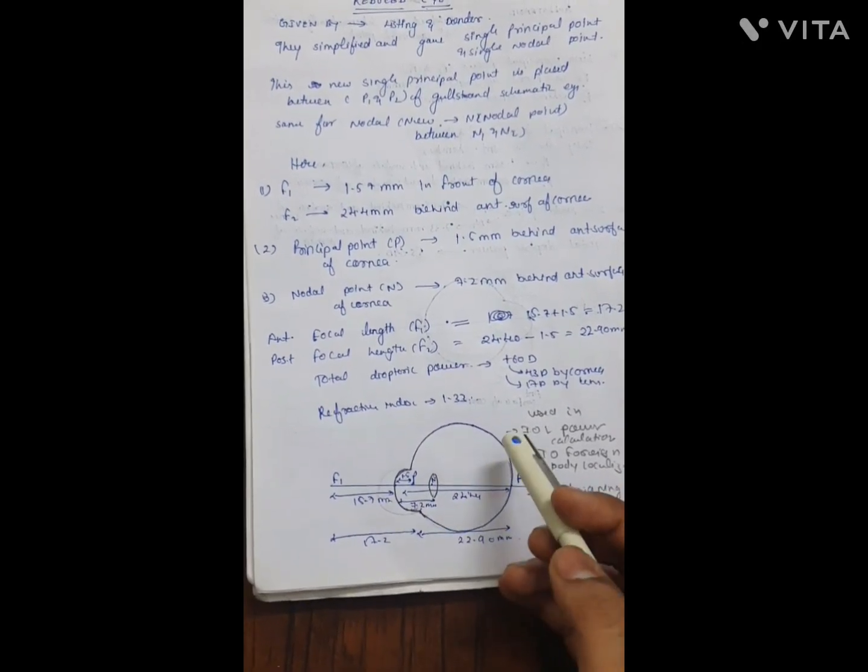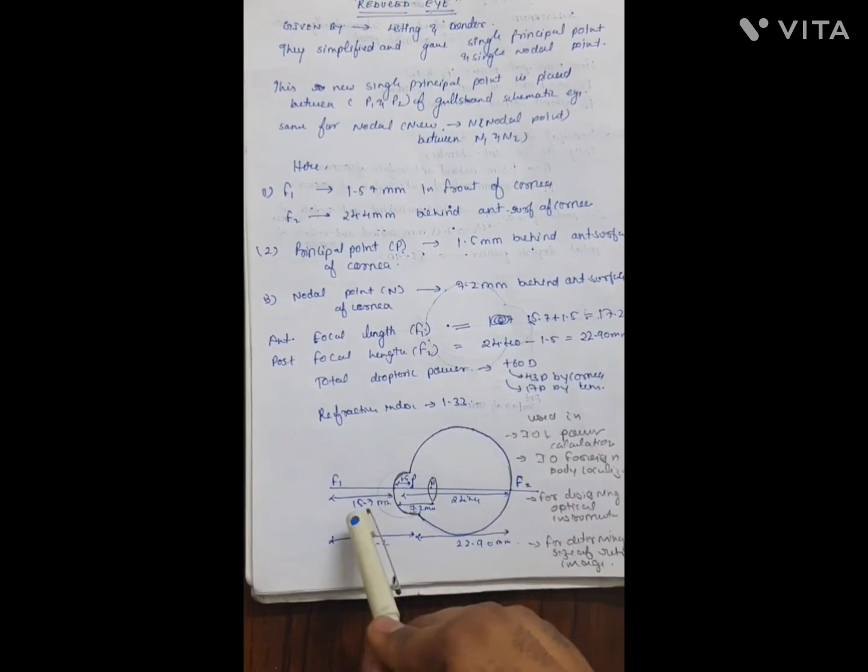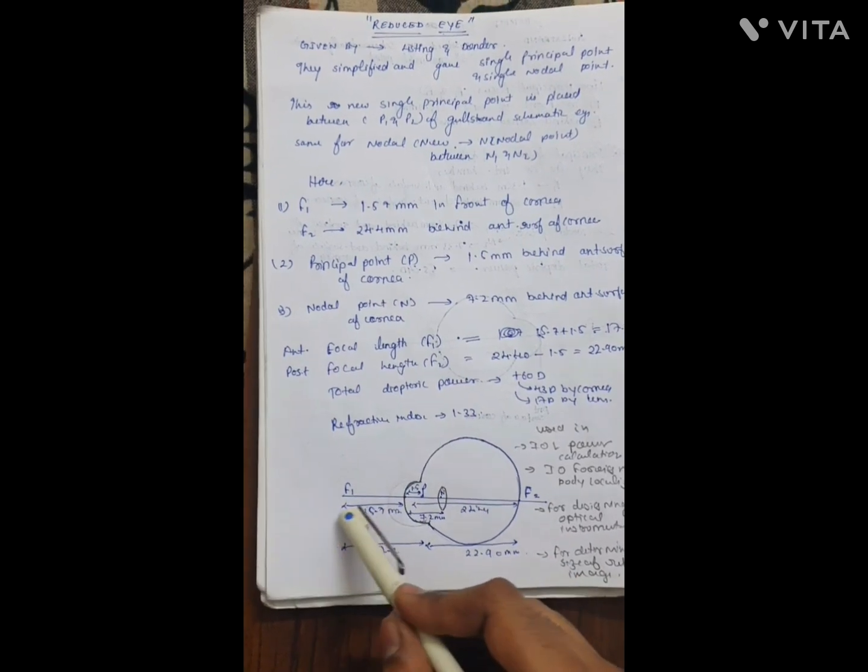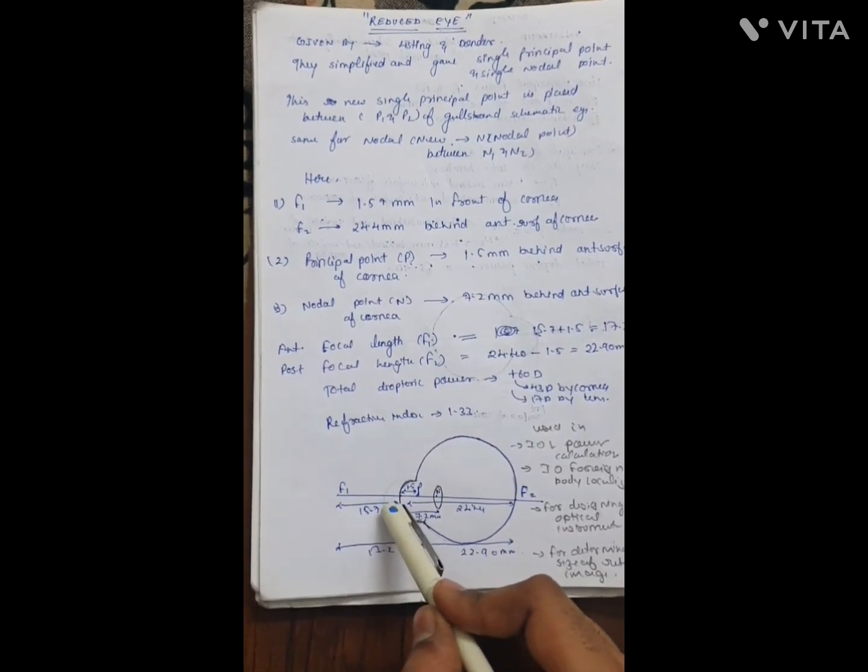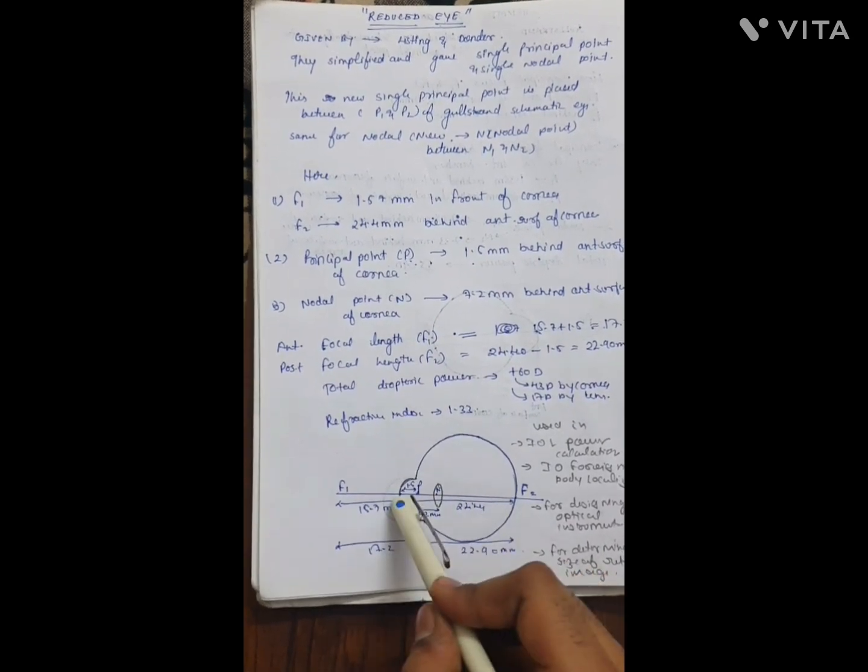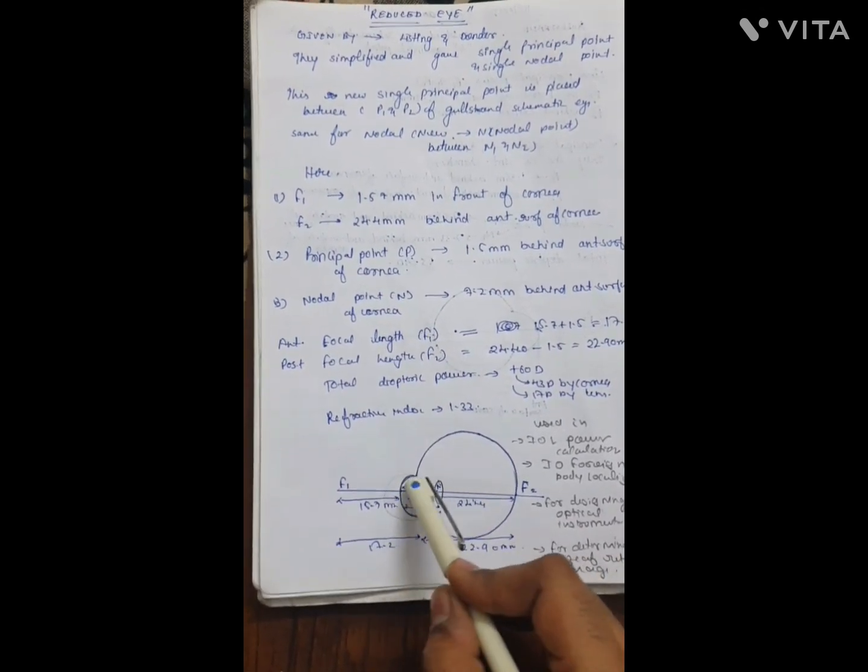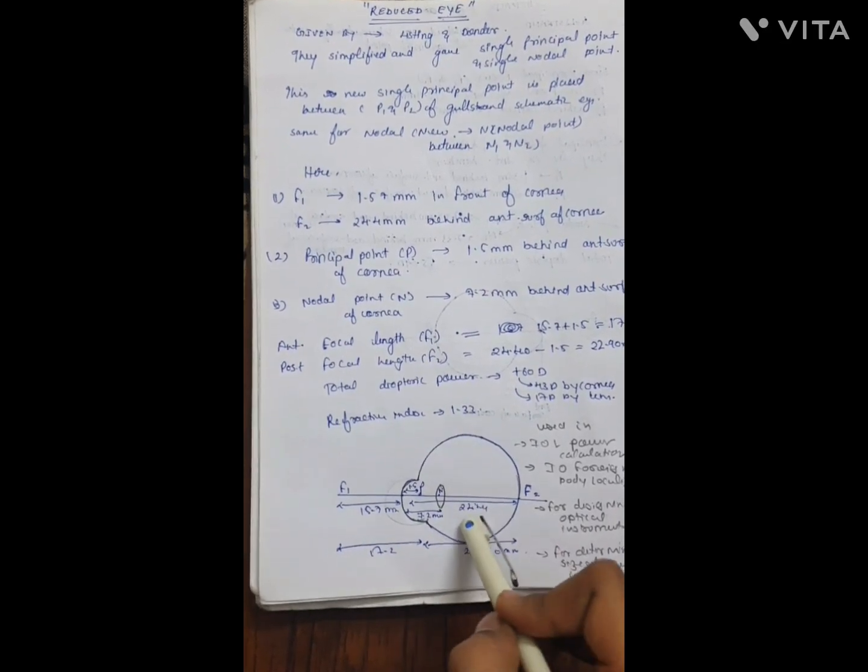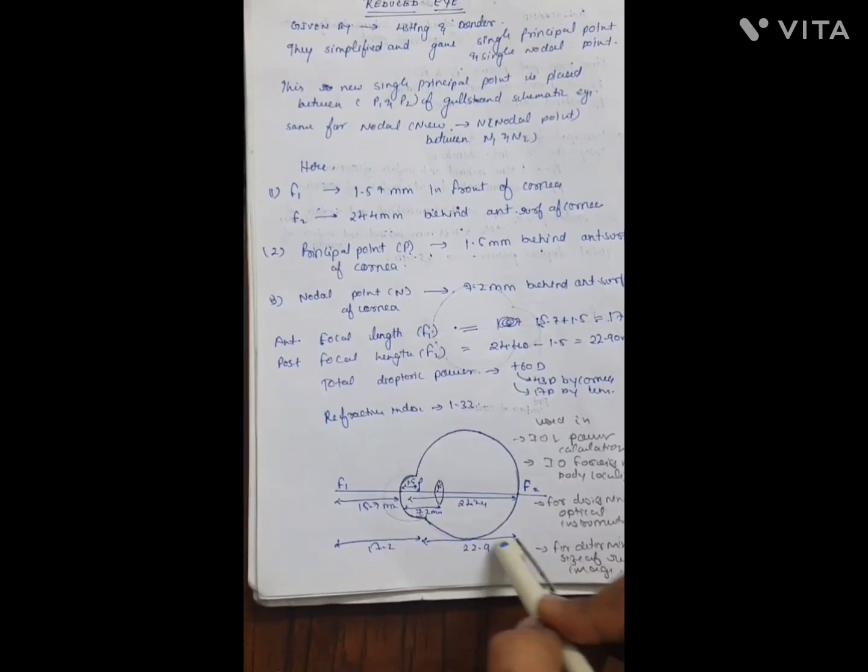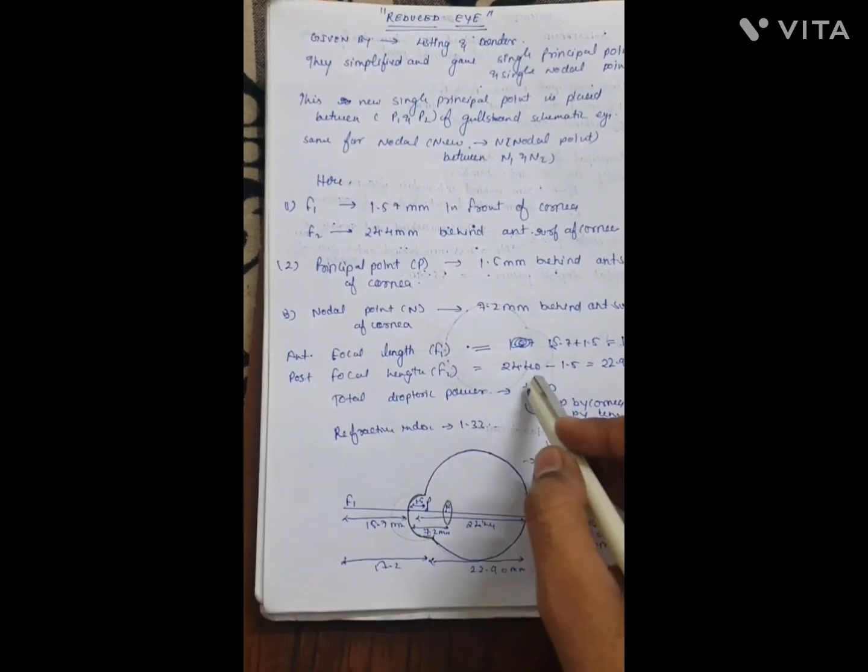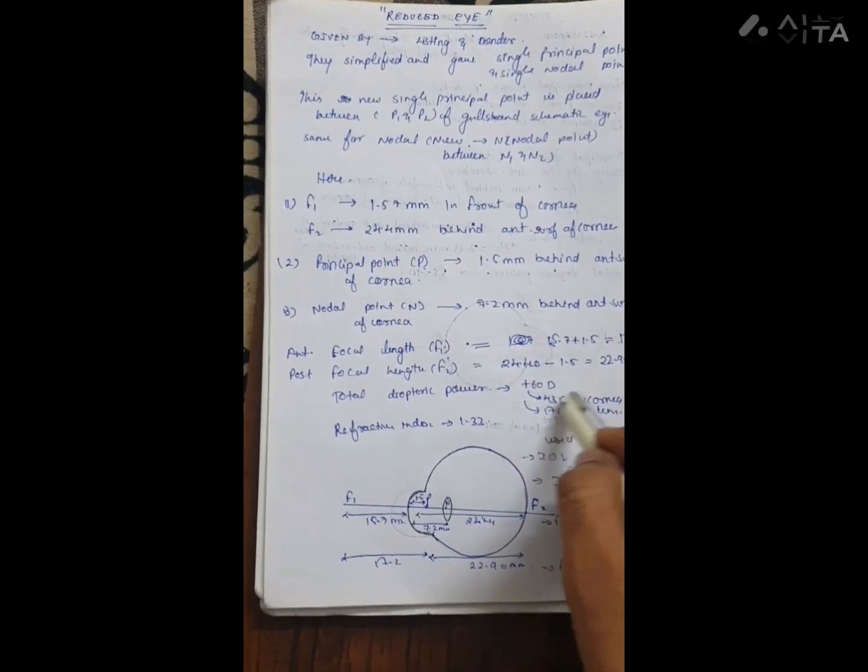For focal lengths measured from point P: F1 focal length is 15.7 plus 1.5 equals 17.2 millimeters, and F2 focal length is 24.4 minus 1.5 equals 22.9 millimeters. The total dioptric power of the reduced eye is 60 diopter, of which 43 is contributed by cornea and 17 by lens.